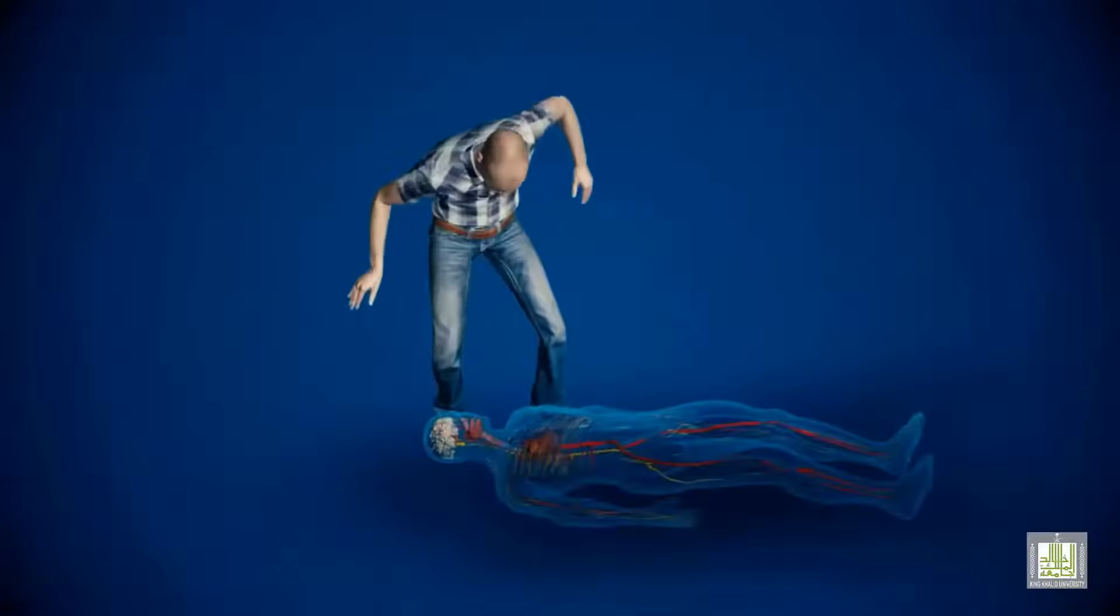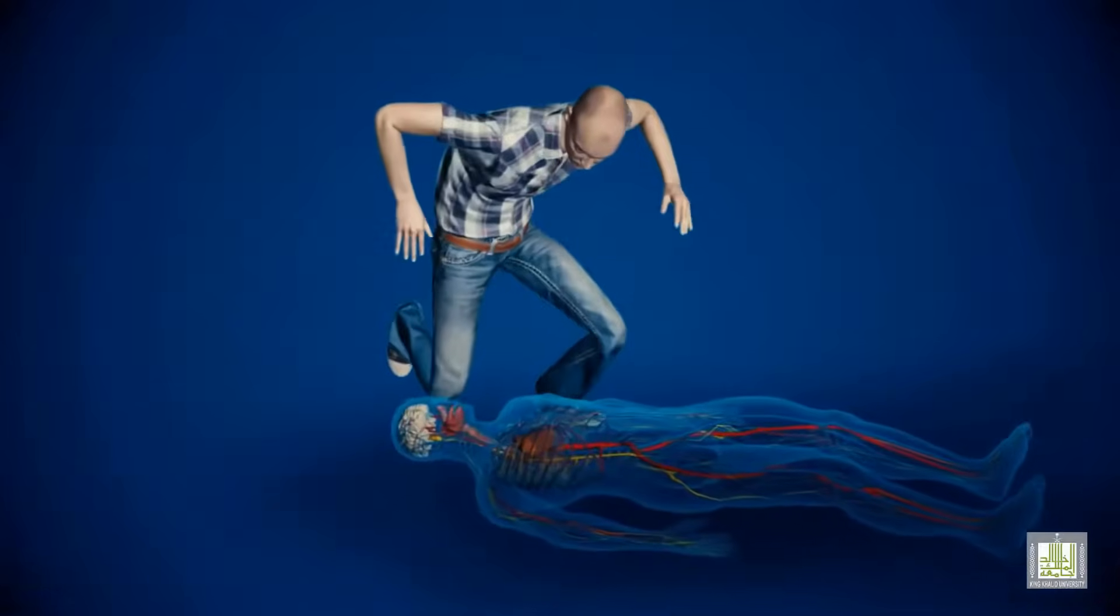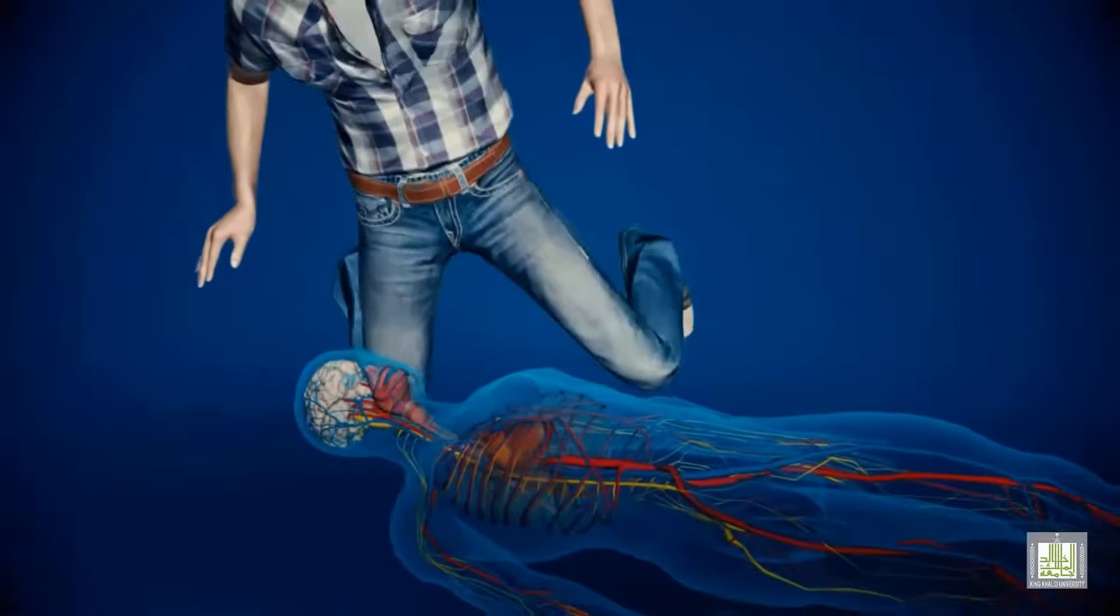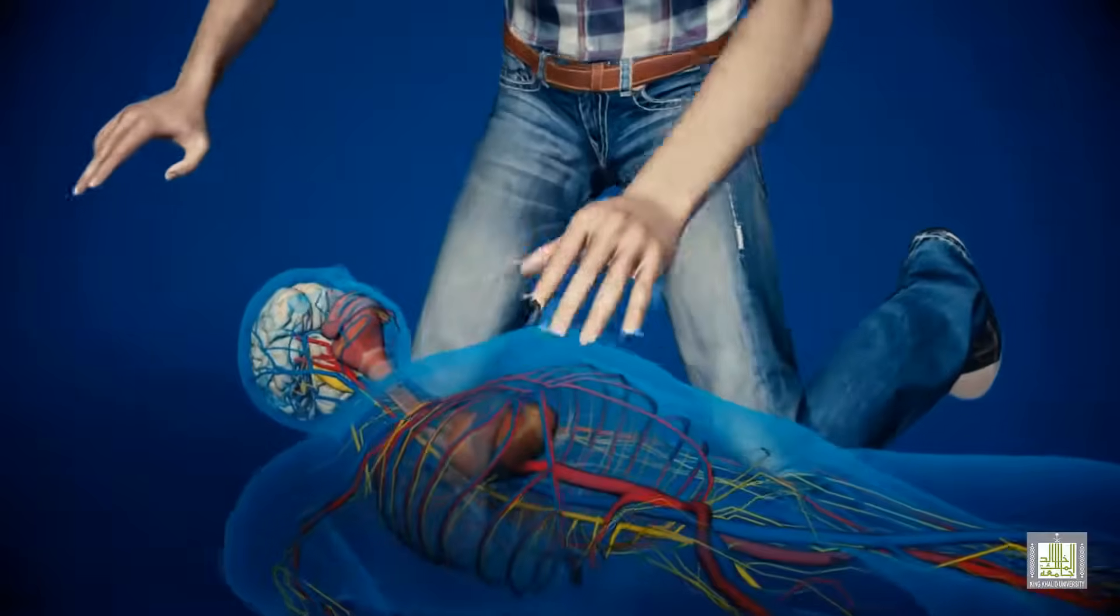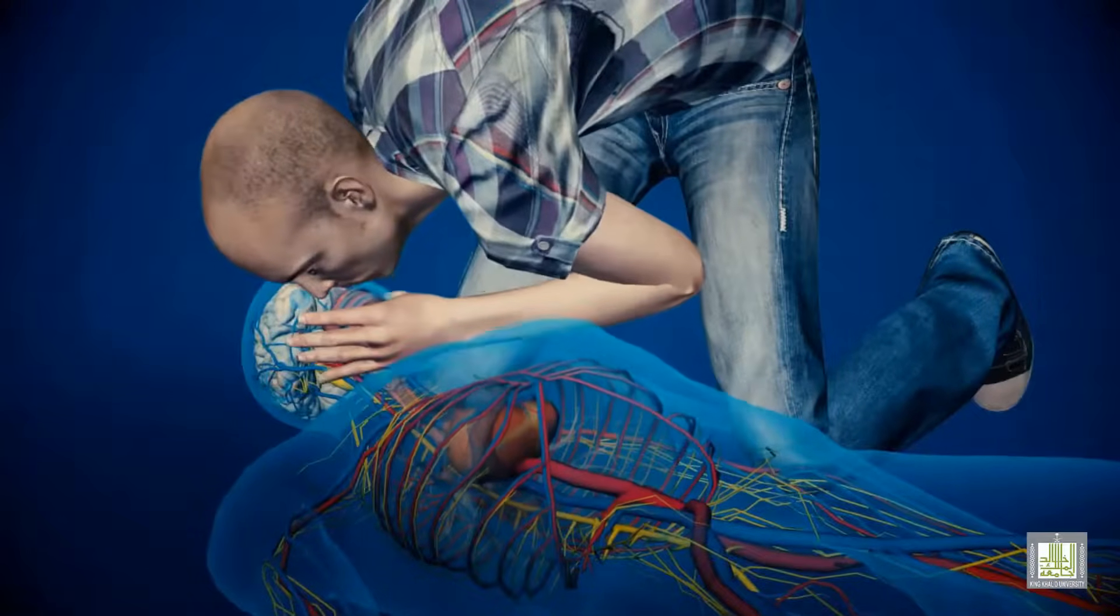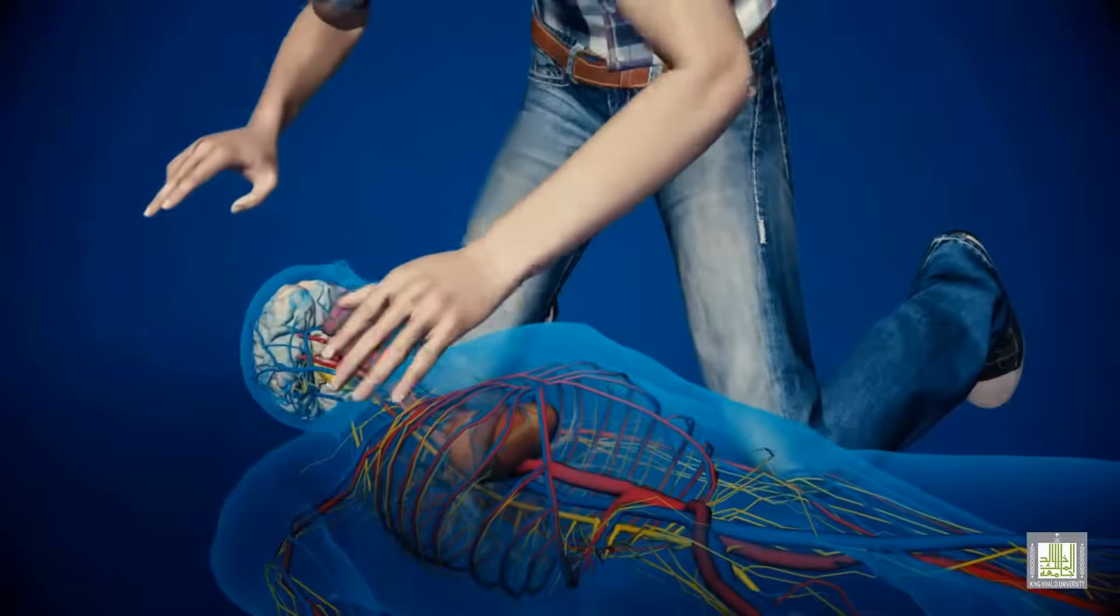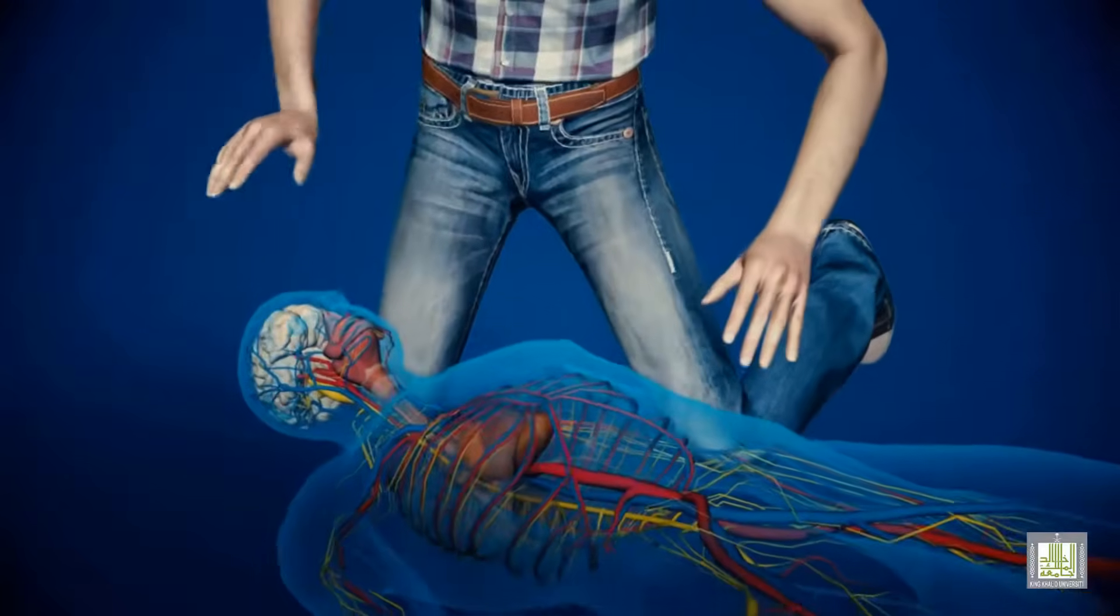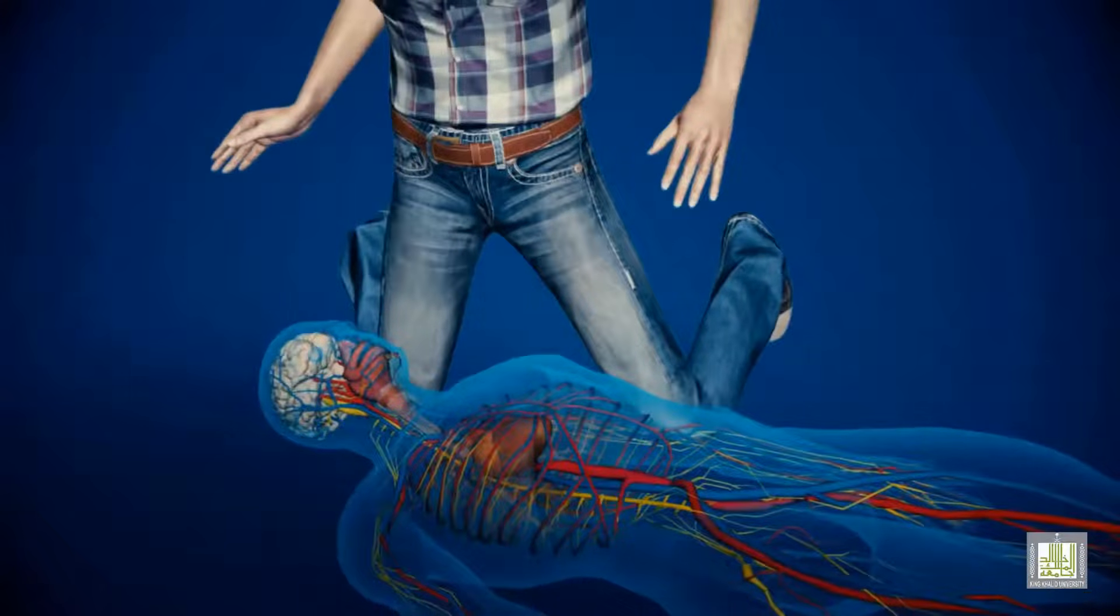B is breathing. Give the victim two rescue breaths after each 30 compressions for adults and children with one rescuer, and after 15 compressions for children with two rescuers. Each breath should be for one second with one second in between two breaths to allow the air out of the chest with full chest recoil. Make sure that the nose is closed.